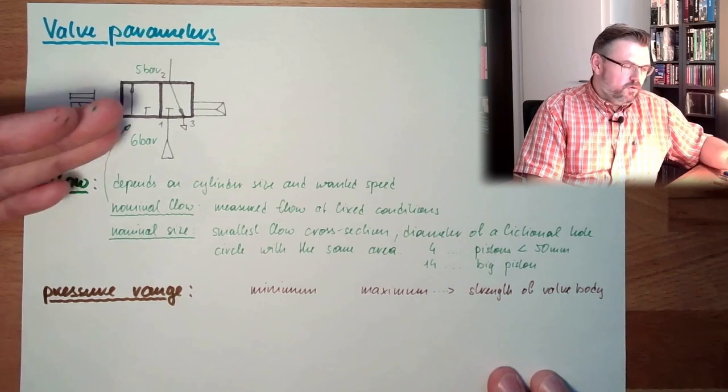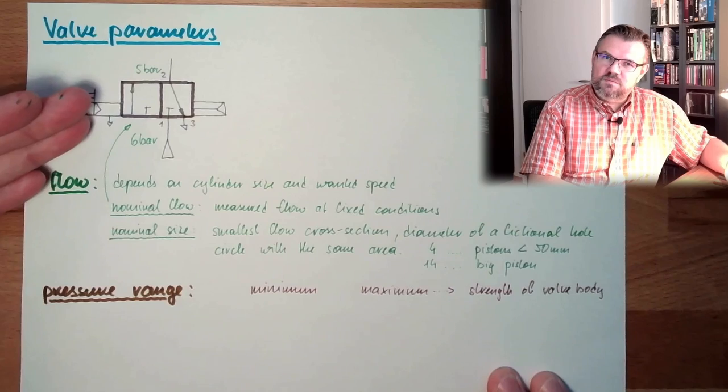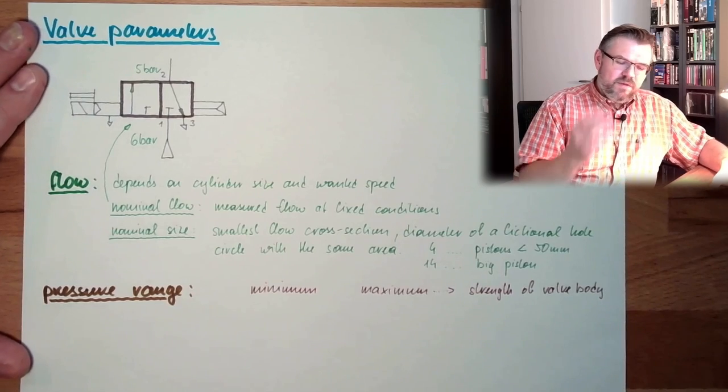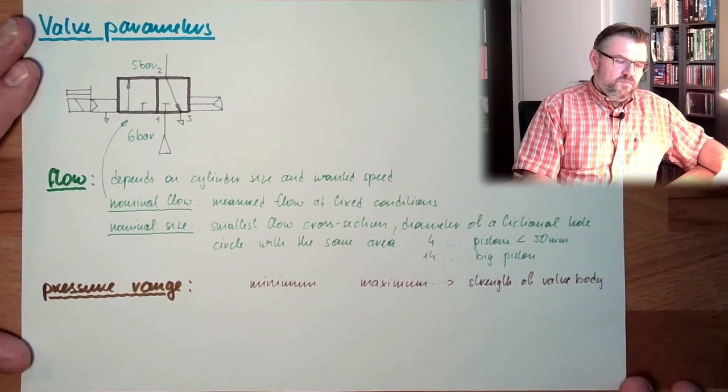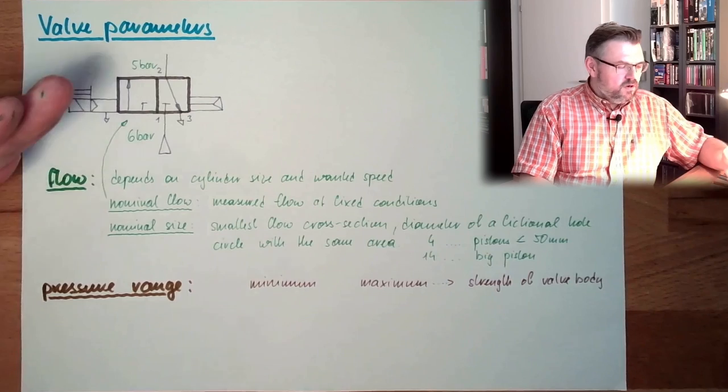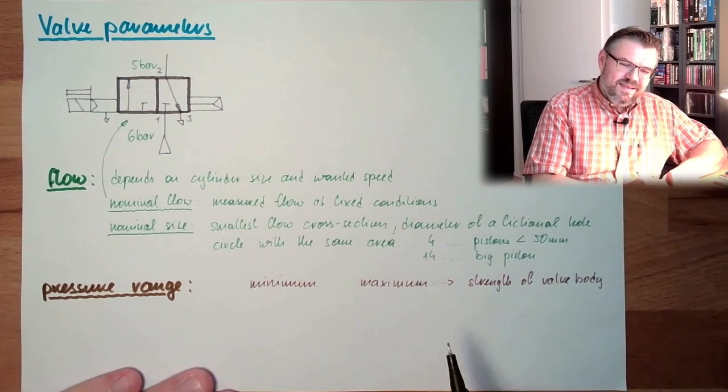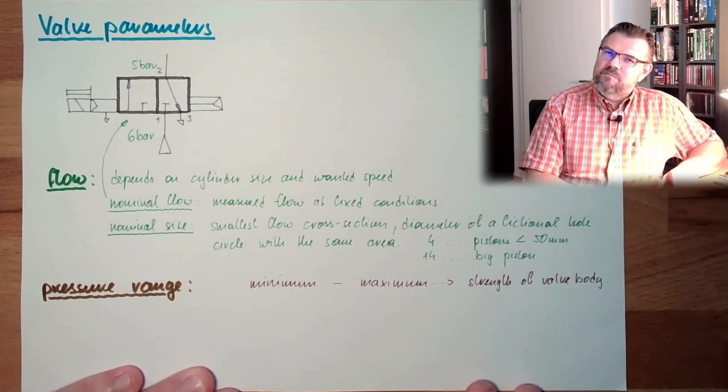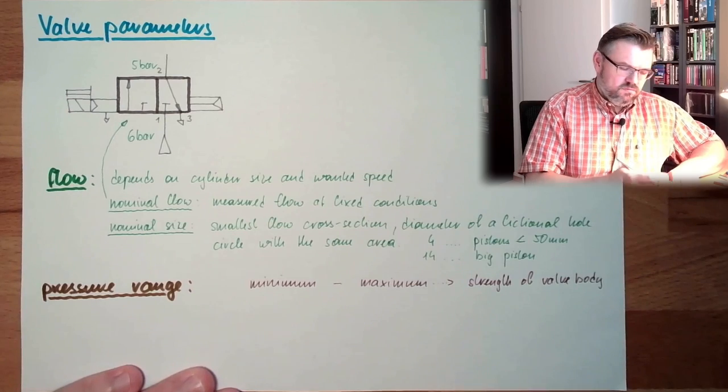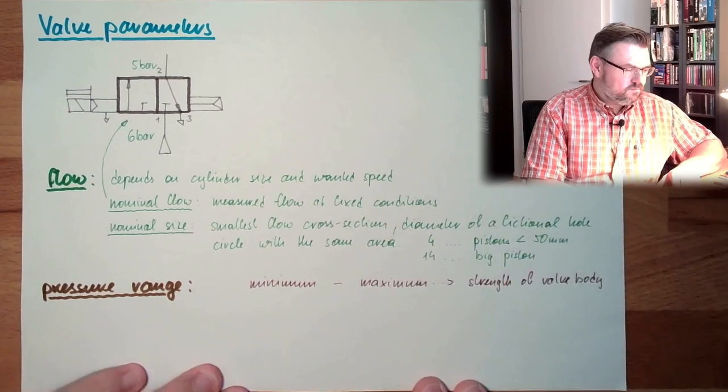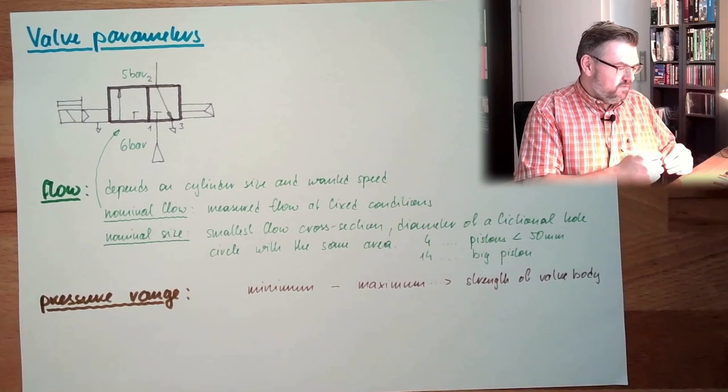We do not want to break this, we do not want to have this exploded. So, there is a maximum pressure. Don't put in more pressure, because then the valve is broken. This is clear for everybody, I hope. But why do we have a minimum pressure?